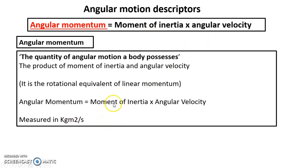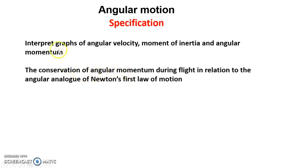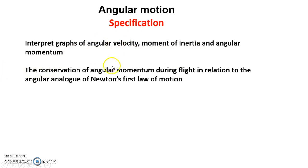So make sure you get that into your notes — kilogram meters squared per second, as we talked about with moment of inertia before. Once we've got that section complete, the final thing we have to do is interpret graphs based around angular velocity, moment of inertia, and angular momentum. So first look at this graph — it can look a bit confusing, but it's actually really, really simple.